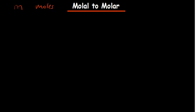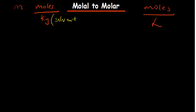Let's talk about how we convert from molal concentration to molar concentration. Molal concentration uses a small letter m, and it means moles of the solute divided by the kilogram of the solvent. Molar concentration, on the other hand, is moles per liter of the solution. So the difference is kilogram of the solvent versus liter of the solution. Molar concentration uses a capital letter M, which is the commonly used one.